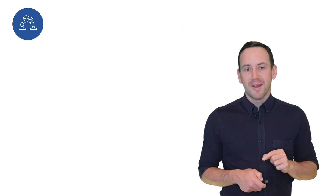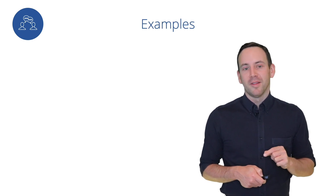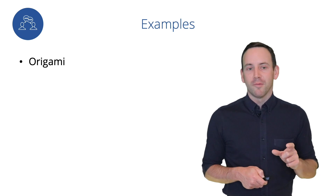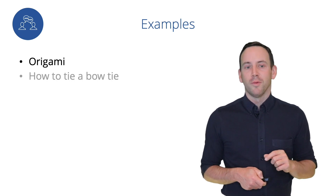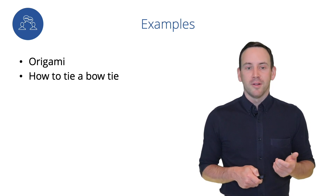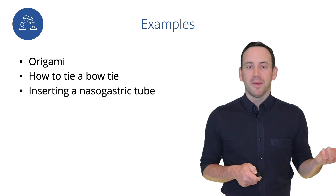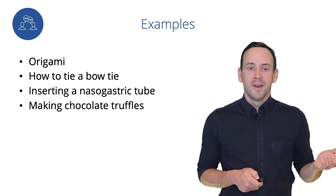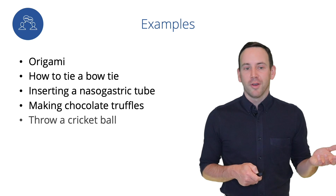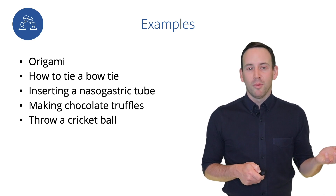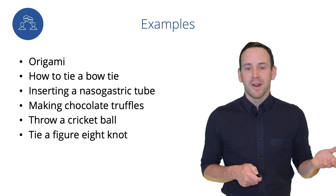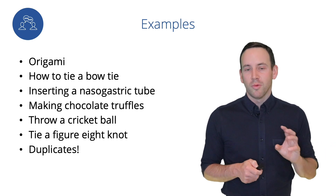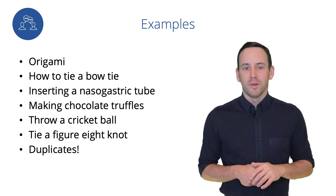I'm going to give you some examples of things that other people have done in the past. The classic is origami — it is a good structured skill you can run through in a short period of time. Other things might include tying a bow tie, how to insert a nasogastric tube (don't try it at home), making chocolate truffles or a cooking activity, throwing a cricket ball, serving in tennis, tying a figure-eight knot. All of these are simple short skills, activities, or learning points.